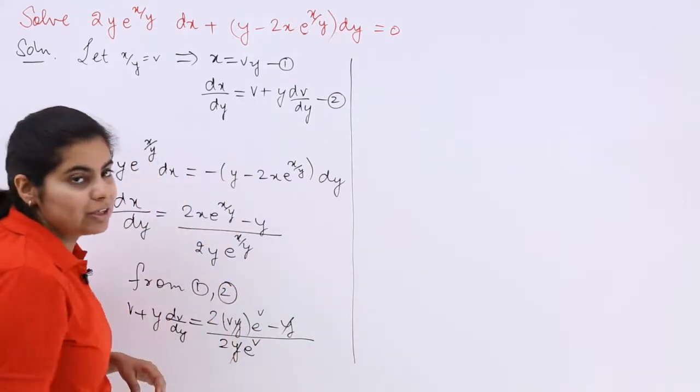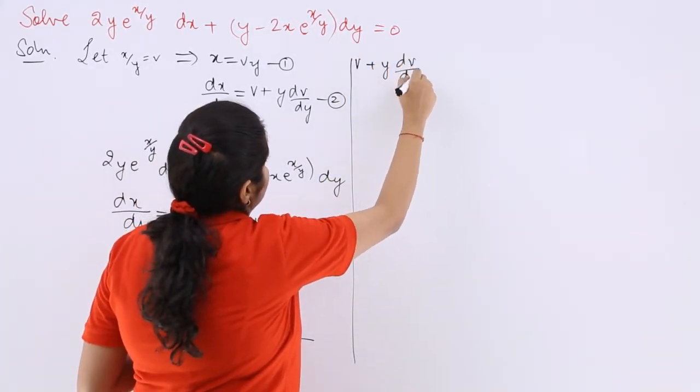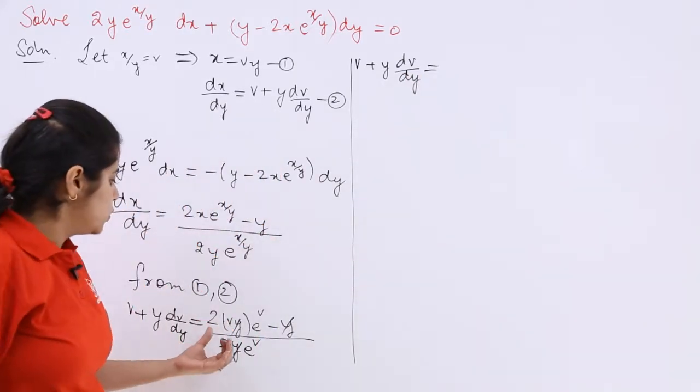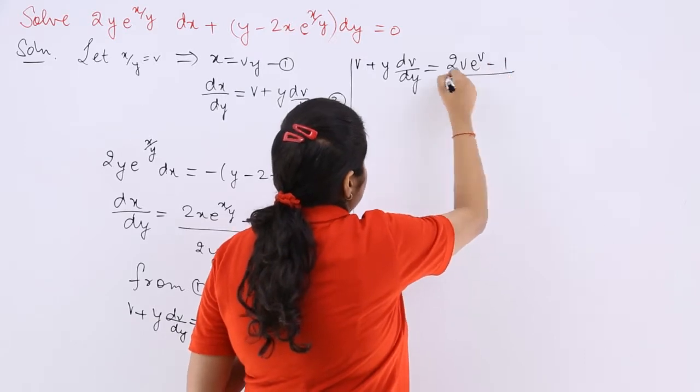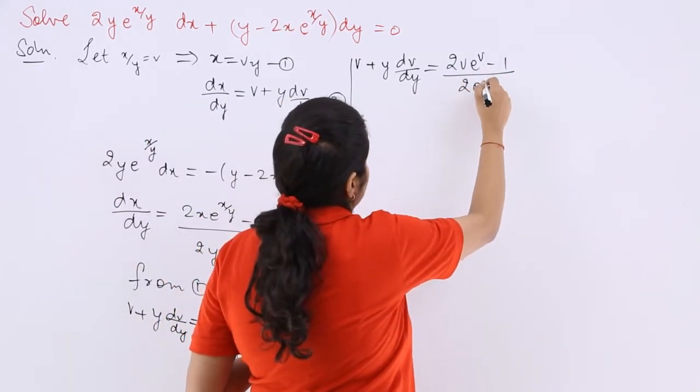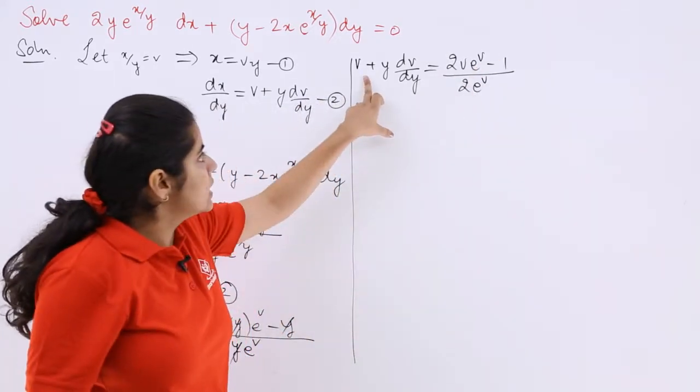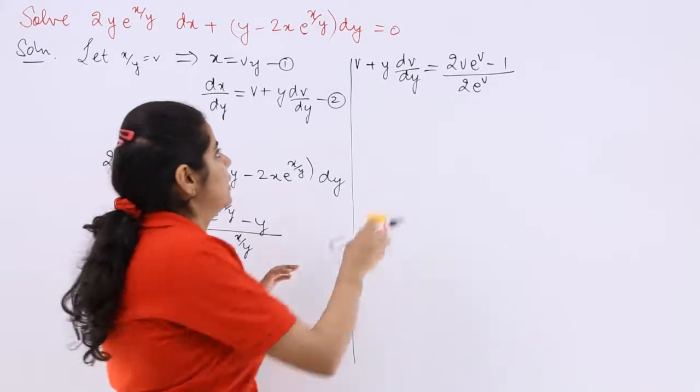Here I do the further part of the solution. This is v + y·dv/dy is equal to (2v·e^v - 1) / (2·e^v). Now see this plus v is there that goes to the other side becomes minus and let's take the LCM.